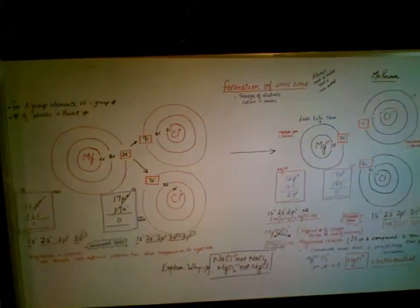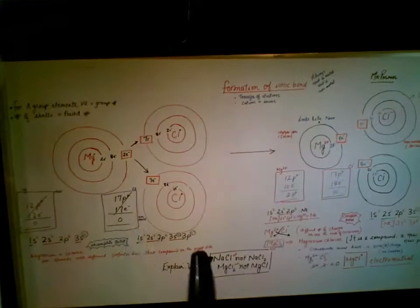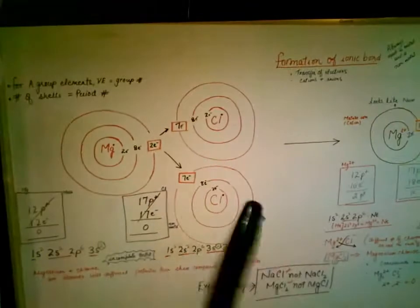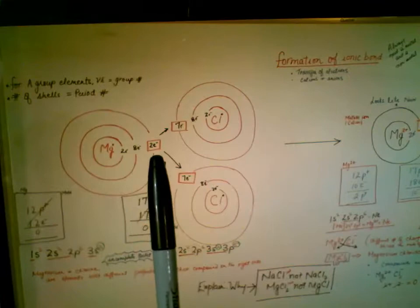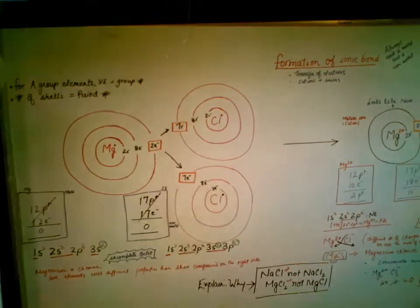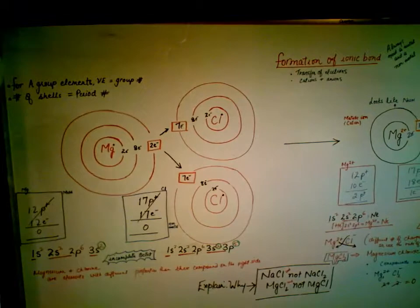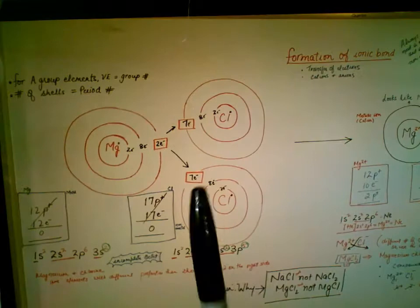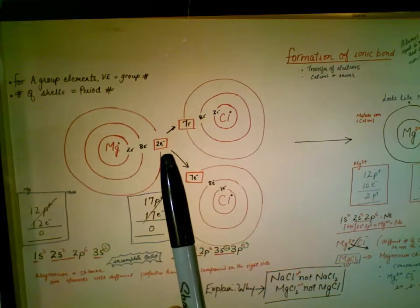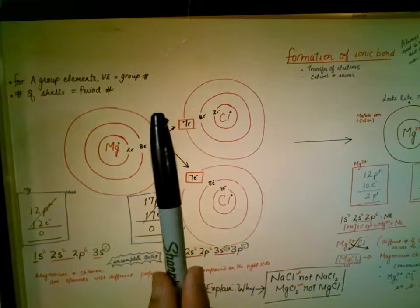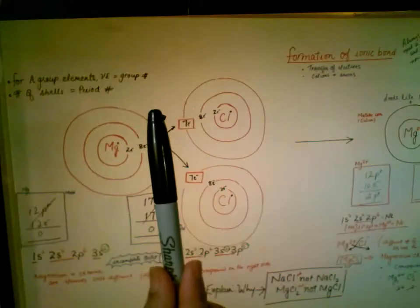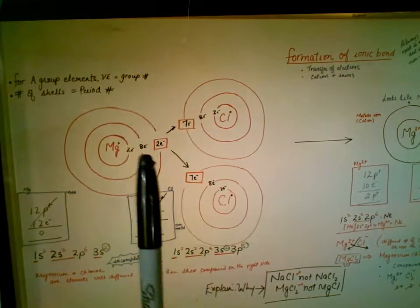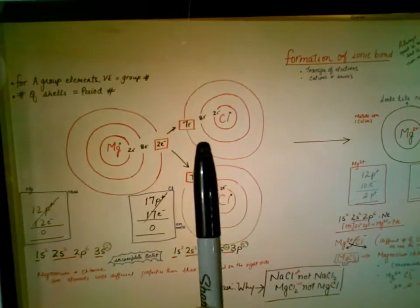Now let's quickly look at another example: magnesium chloride. Magnesium has 12 electrons with electron configuration 2-8-2, written as 1s2 2s2 2p6 3s2. Magnesium needs to lose two electrons in order to be stable and have a complete octet. If we hide those outer electrons, we get eight valence electrons.